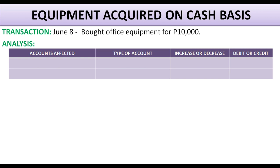June 8, bought office equipment for 10,000 pesos. What are the accounts affected? Office equipment. Why is office equipment affected? Because we bought office equipment. What type of account is office equipment? This is an asset. When we bought office equipment, what happened to our asset? It increased or was added to. Because if before we had no asset, after buying we gained one. So it increased.